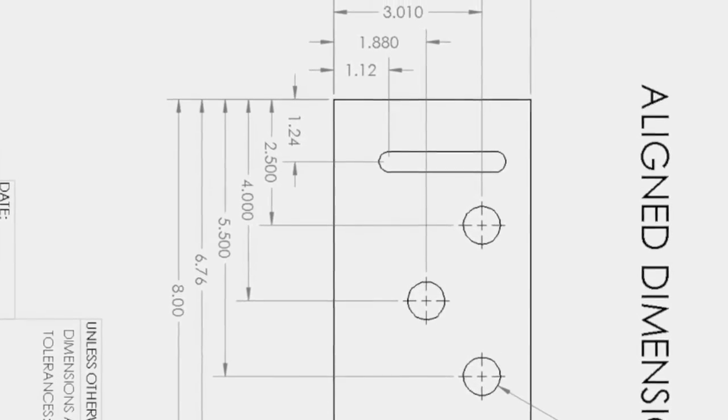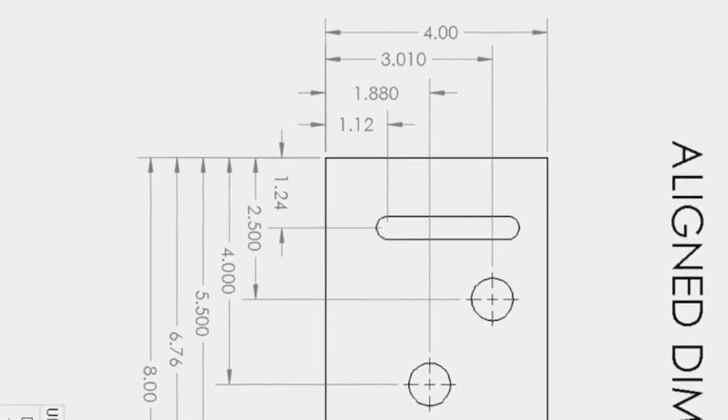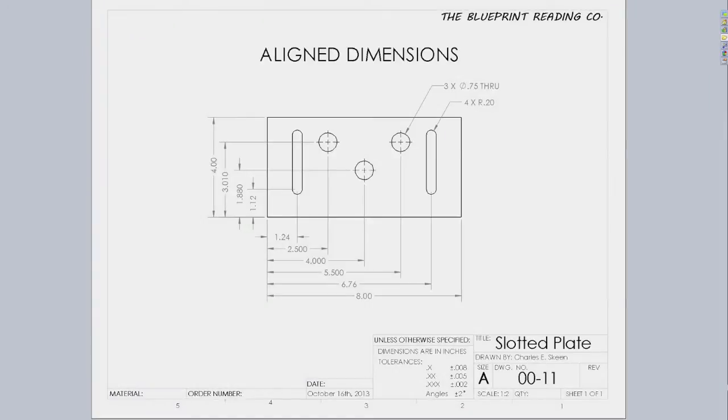Aligned dimensions are no longer standard practice, but many companies may still use this format in their drawings, especially if they use dated drawings using old drafting standards. It is unacceptable to use the unidirectional and aligned dimensioning methods in the same drawing.